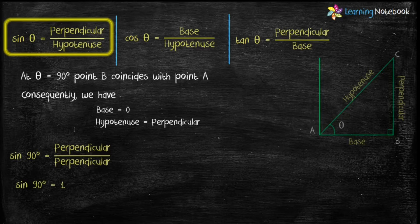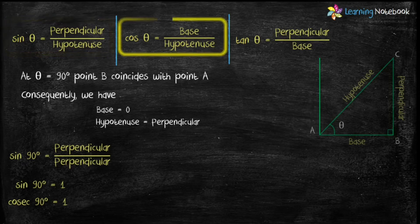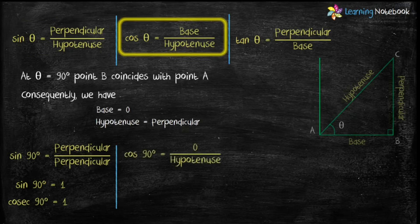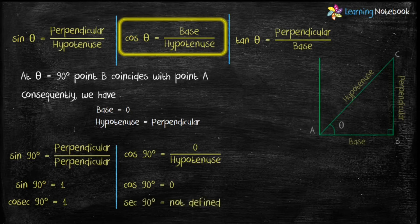Therefore cosec 90° equals 1 upon sin 90°, which equals 1. Now putting the values into cos theta equals base upon hypotenuse, we get cos 90° equals 0 upon hypotenuse, which equals 0. Therefore sec 90° equals 1 upon cos 90°, which is not defined (equal to 0 in denominator).